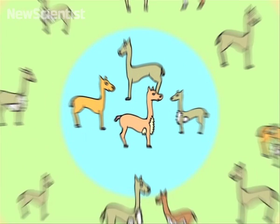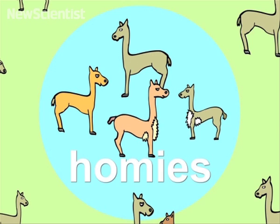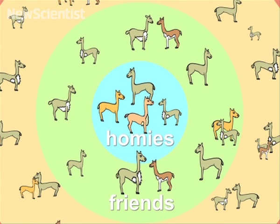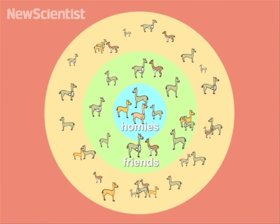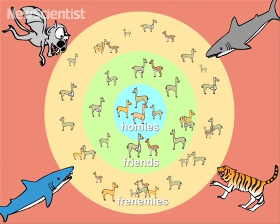So an individual might have a few close friends that they spend most of their time with, a bunch of acquaintances that might help out to find food, and an even larger circle that really only comes together when there's a true danger to the whole group.